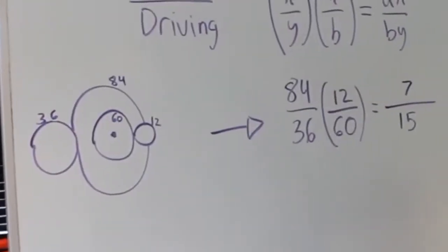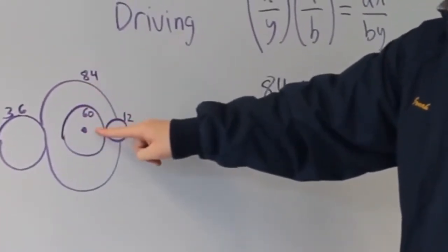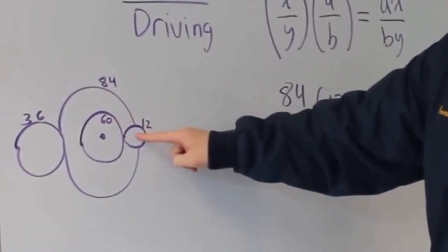In this real life example, I have a 36 tooth gear driving an 84 tooth gear, which is on the same axle as a 60 tooth gear, driving a 12 tooth gear.